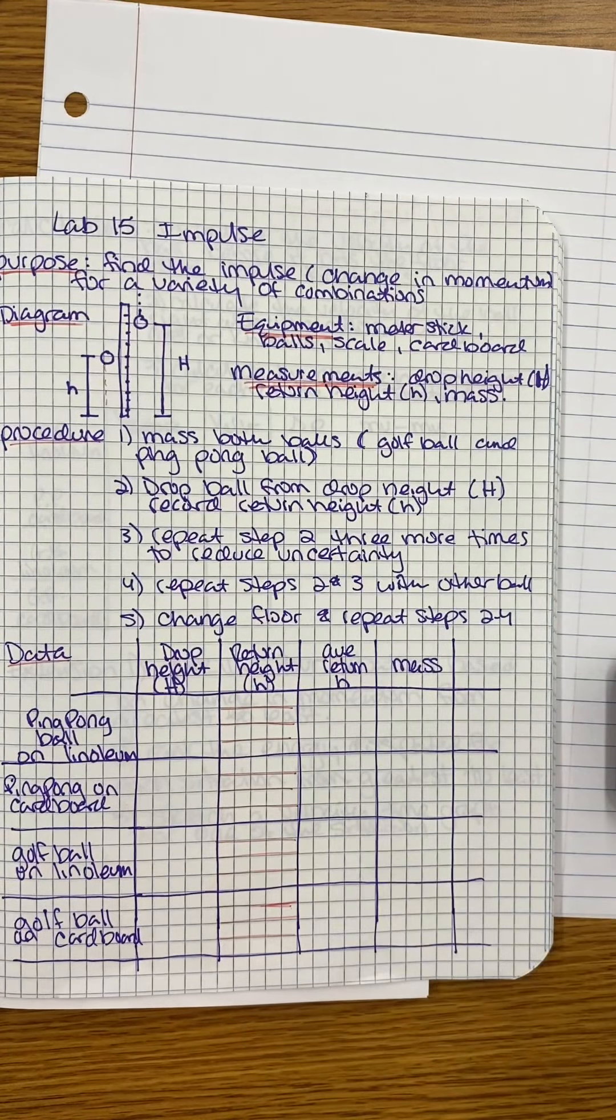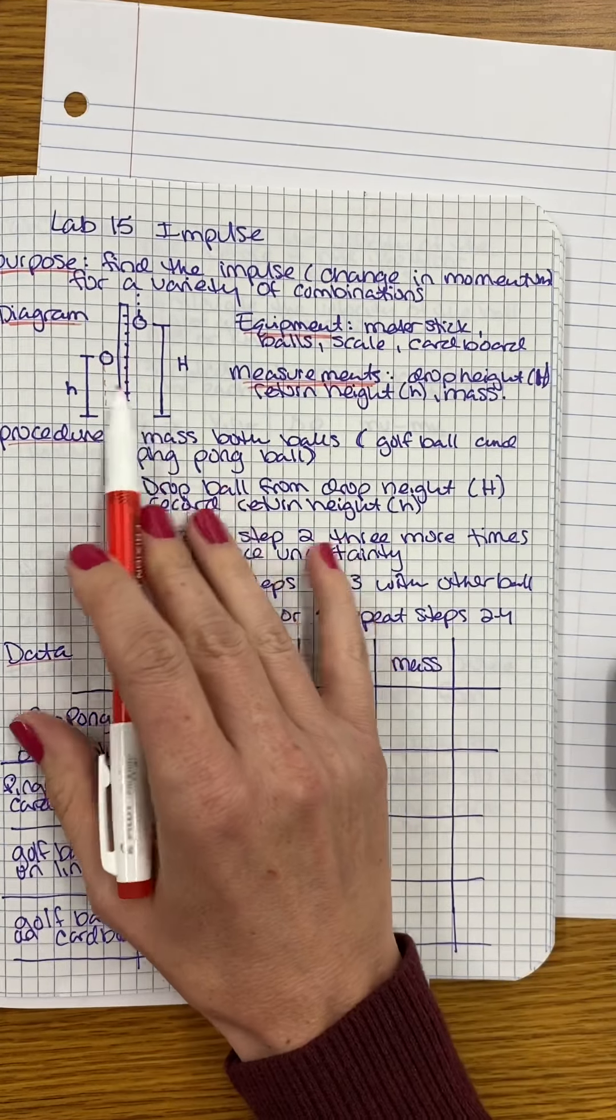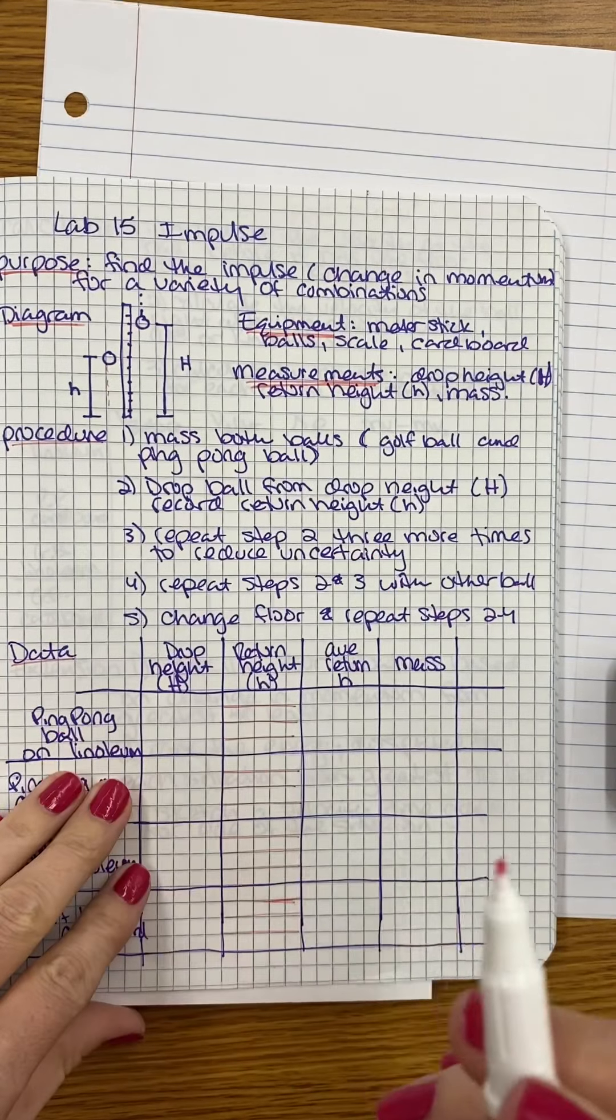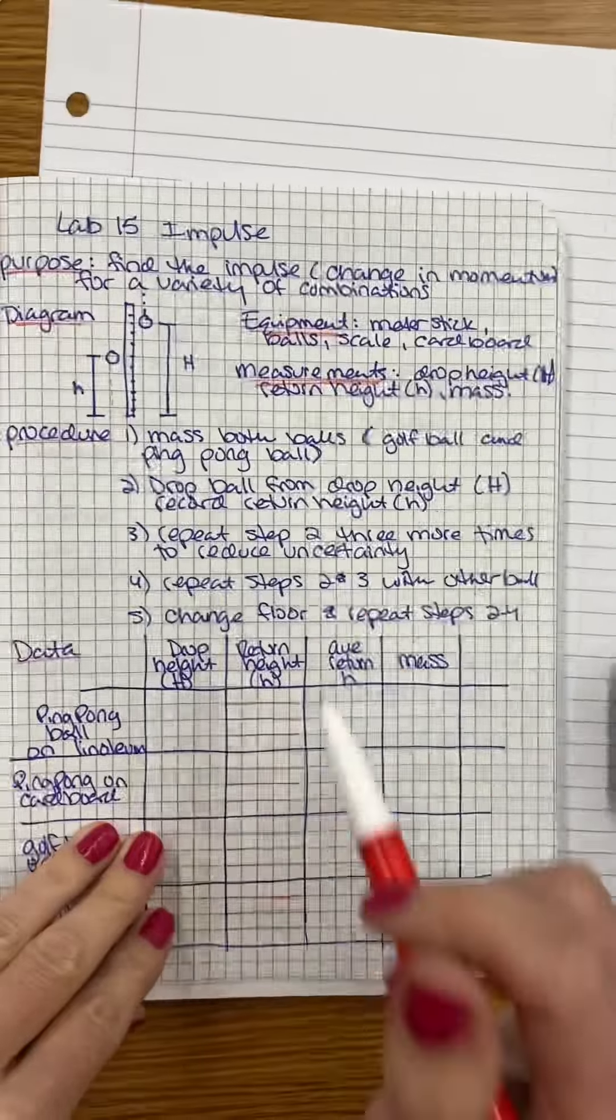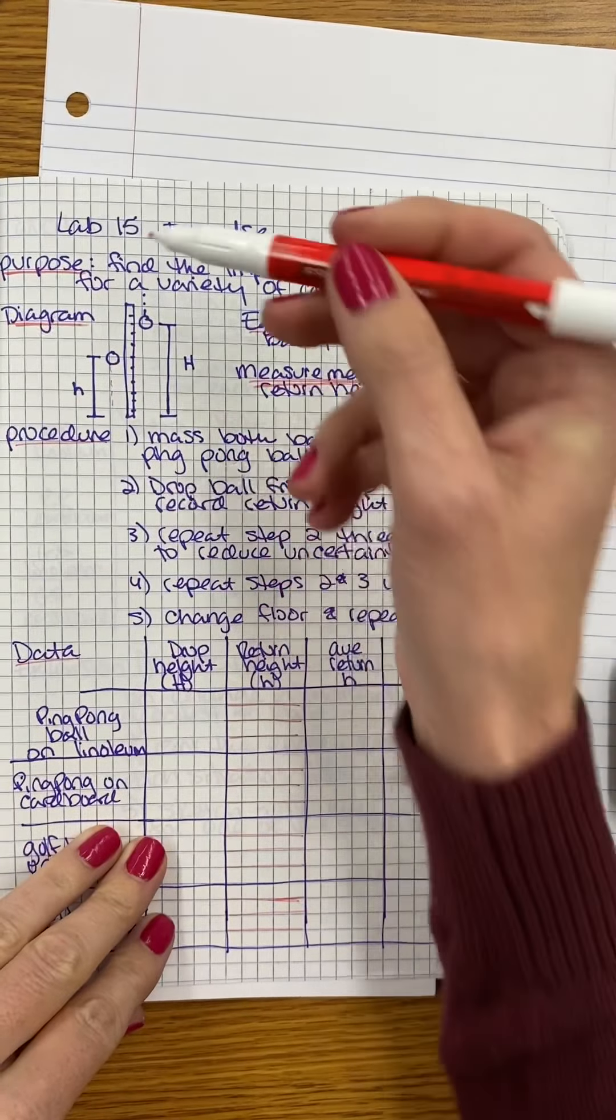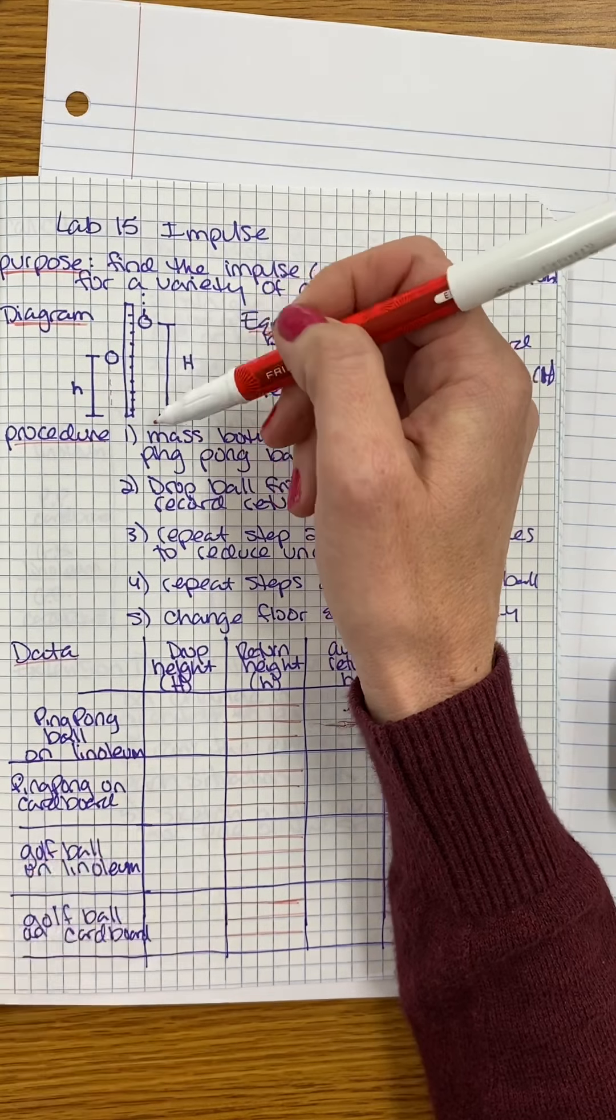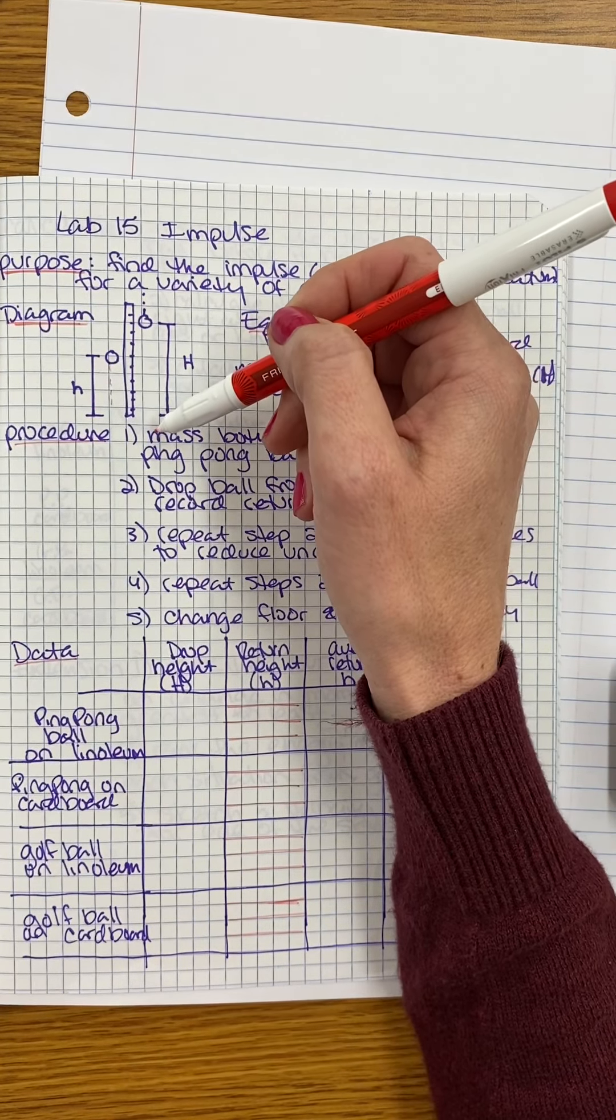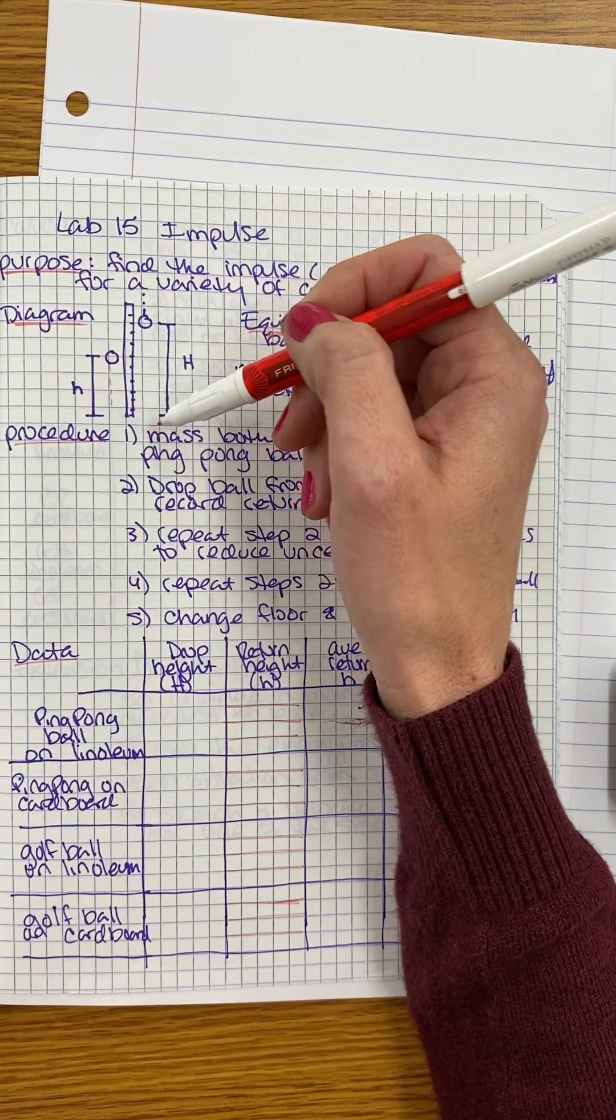It actually doesn't matter what you identify as negative or positive. As long as you're identifying that one of these is positive and the other is negative, is the most important thing. Also, you should be consistent. So if you're identifying this is negative, the drop velocity is negative, you need to do that for each one of your trials so that you can have a true comparison.